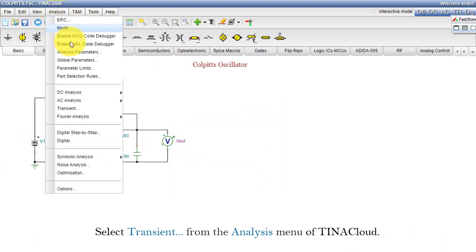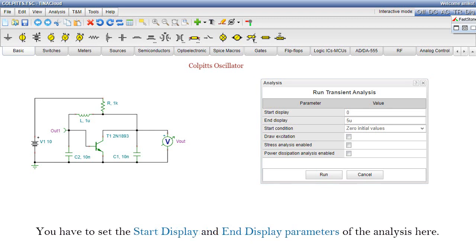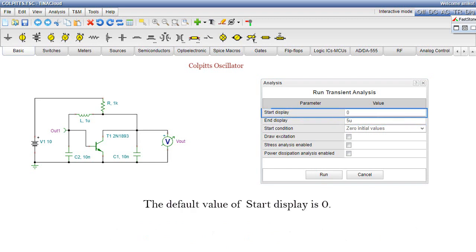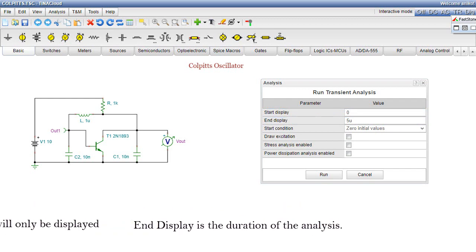Select Transient from the Analysis menu of TinaCloud. The Run Transient Analysis dialog appears. You have to set the Start Display and End Display parameters of the analysis here. The default value of Start Display is 0. If you change it, the analysis will still start at t equals 0. However, the result will only be displayed from the Start Display time point. End Display is the duration of the analysis.